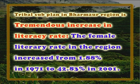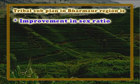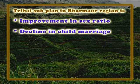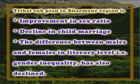The female literacy rate in the region increased from 1.88 percent in 1971 to 42.83 percent in 2001. Improvement in sex ratio is observed and decline in child marriage. The difference between males and females in literacy level, that is gender inequality, has also declined. The cultivation of pulses and other cash crops has increased in the region.